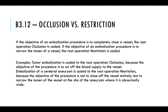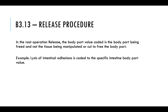Occlusion versus restriction: The objective of an embolization procedure to completely close a vessel is coded to occlusion — a great example is tying of the tubes (female sterilization). When you close off the fallopian tube, it's occlusion. However, when the objective is to narrow the lumen of a vessel but not close it completely, the root operation is restriction. The release procedure: in root operation release, the body part value coded is the body part being freed, not the tissue being manipulated or cut to free the body part. For example, lysis of adhesions is coded to the specific intestinal body part value.